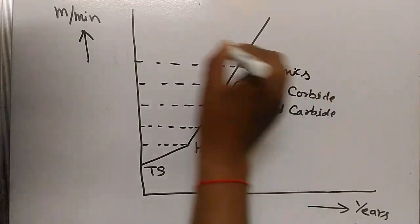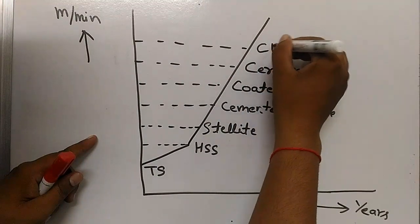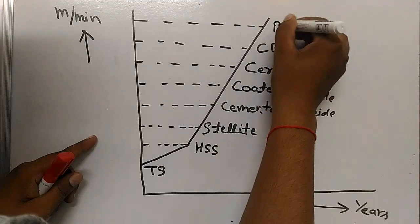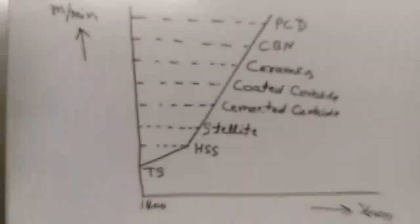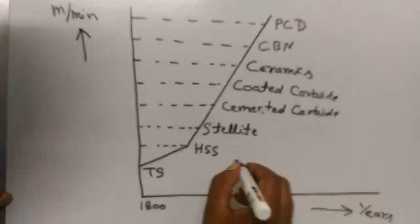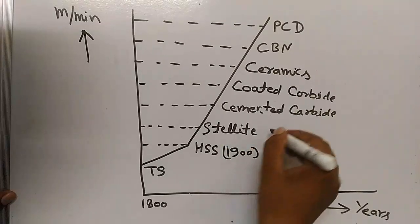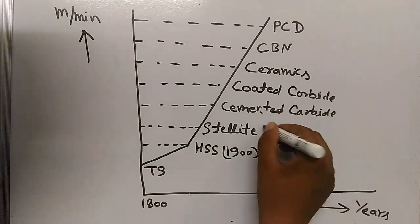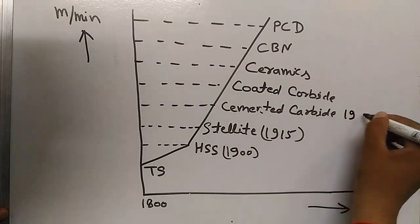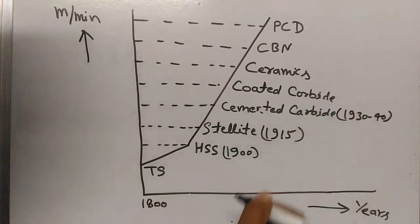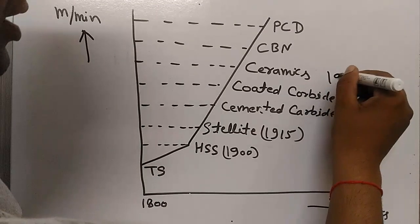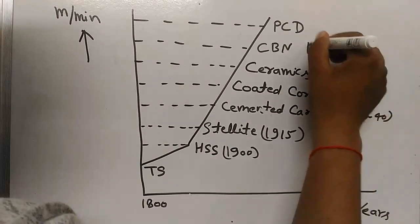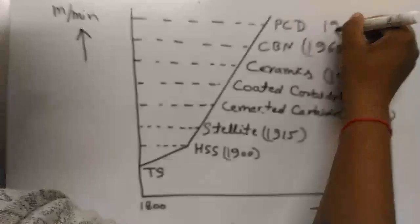On the graph, the materials are plotted in order: ceramics, cubic boron nitride, and polycrystalline diamond. Carbon tool steel was invented around 1800, high speed steel around 1900, stellite around 1915, cemented carbide in 1930 to 1940, coated carbide in 1950, ceramics in 1960, cubic boron nitride in 1969, and PCD in 1973.